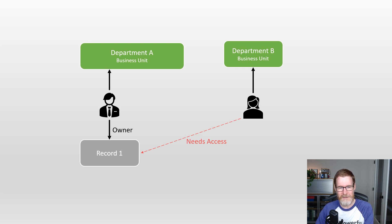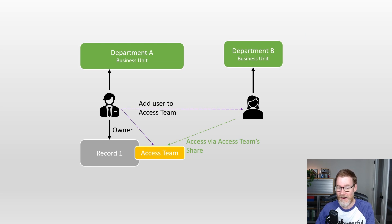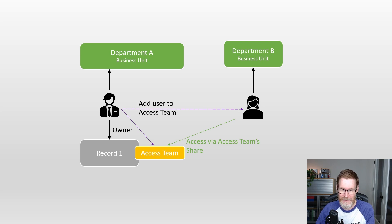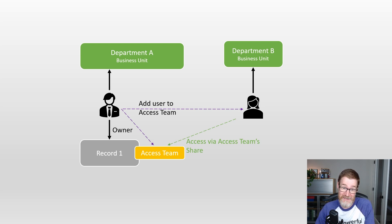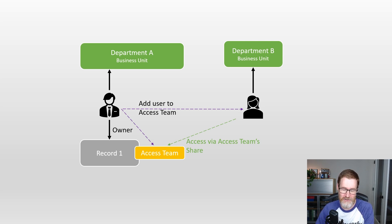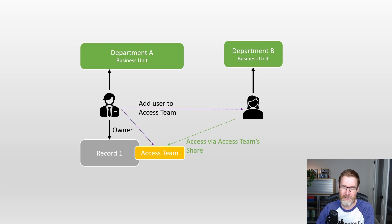Another option is to give access via an access team. These access teams are sort of like special teams that are lightweight — when you share a record with an access team, it doesn't create lots and lots of principal object access records for the users, just for the team. You put the user in that team and they get access to that record. There are templates you can define for types of access, or you can do it programmatically. It's quite a commonly used approach and it gets around some of those performance challenges, but it can get horrendously complicated and very hard to maintain.